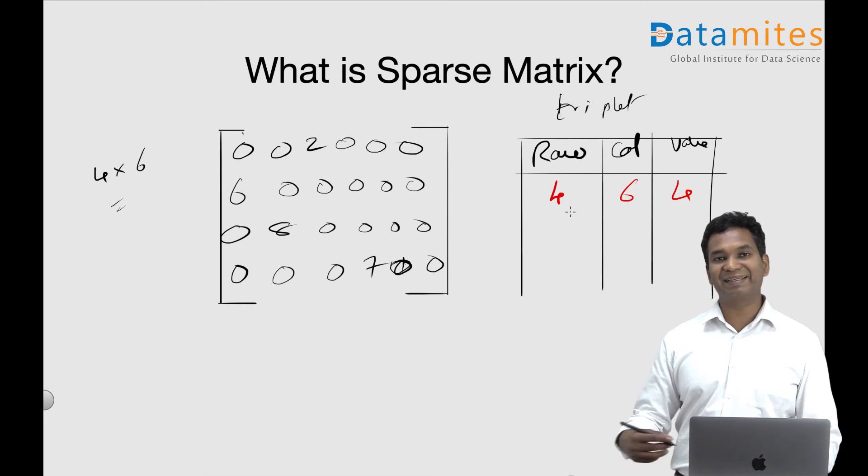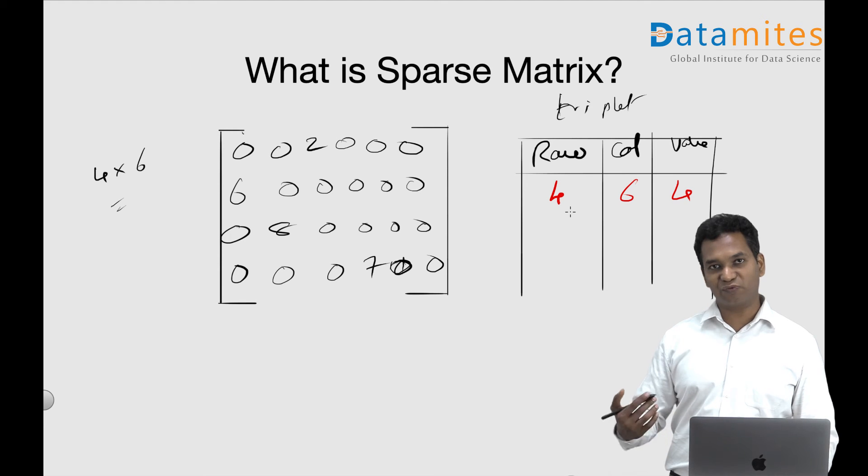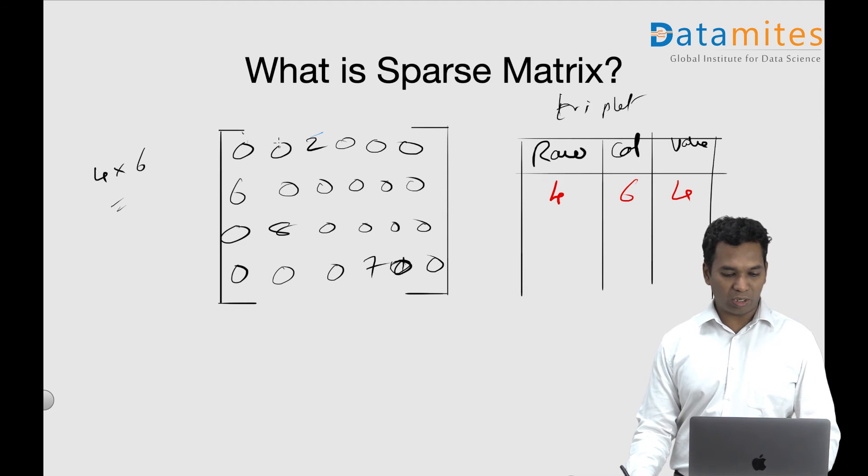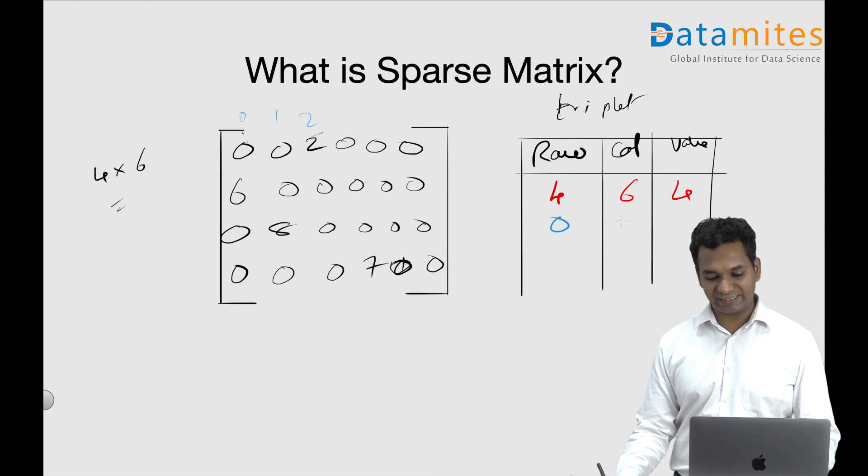It basically gives coordinates like rows and columns of these four non-zero elements. The first element here is two. Two is actually in the first row, which is row zero, and actually it is in the third column, which has index number two, and the value is actually two as well.